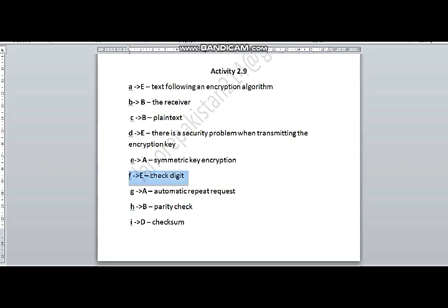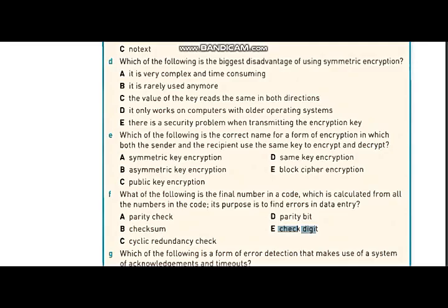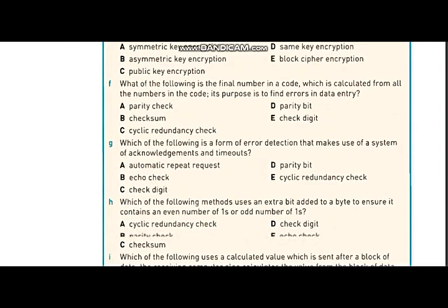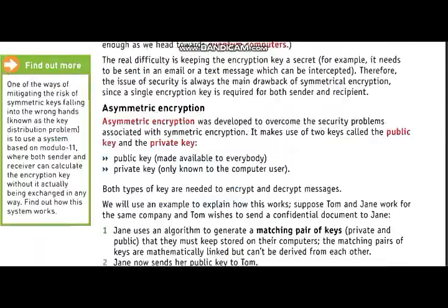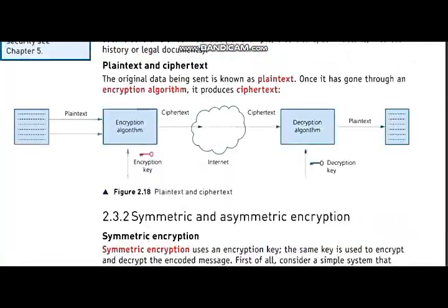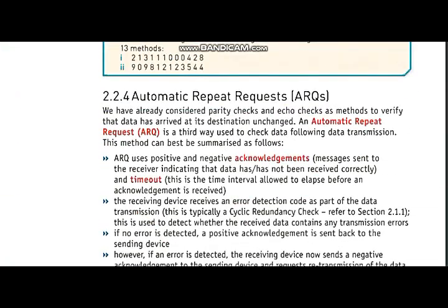Now let's move on to part G: which of the following is a form of error detection that makes use of a system of acknowledgments and timeouts? As you can see from the book, ARQ is the method that uses acknowledgments and timeouts.